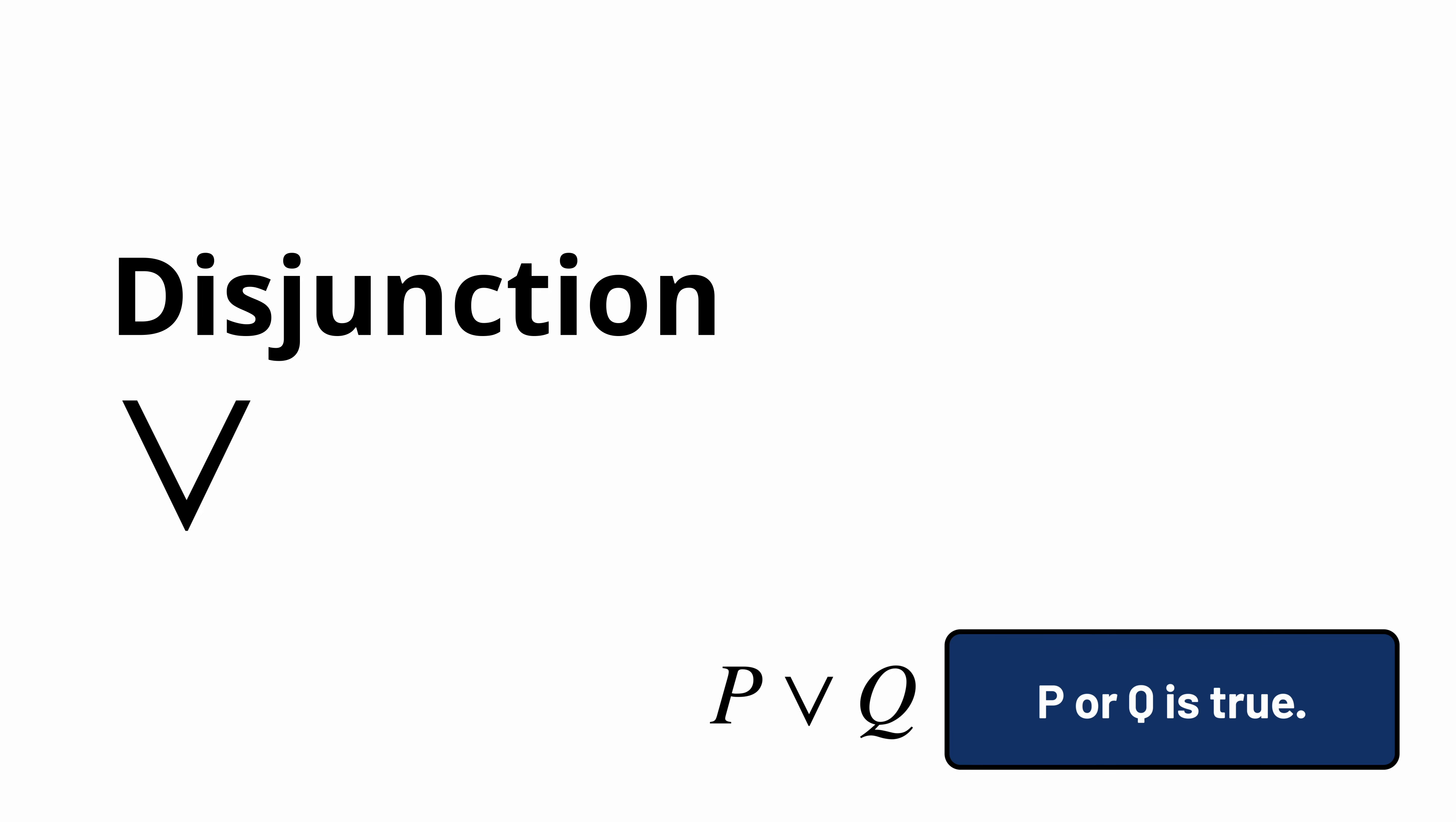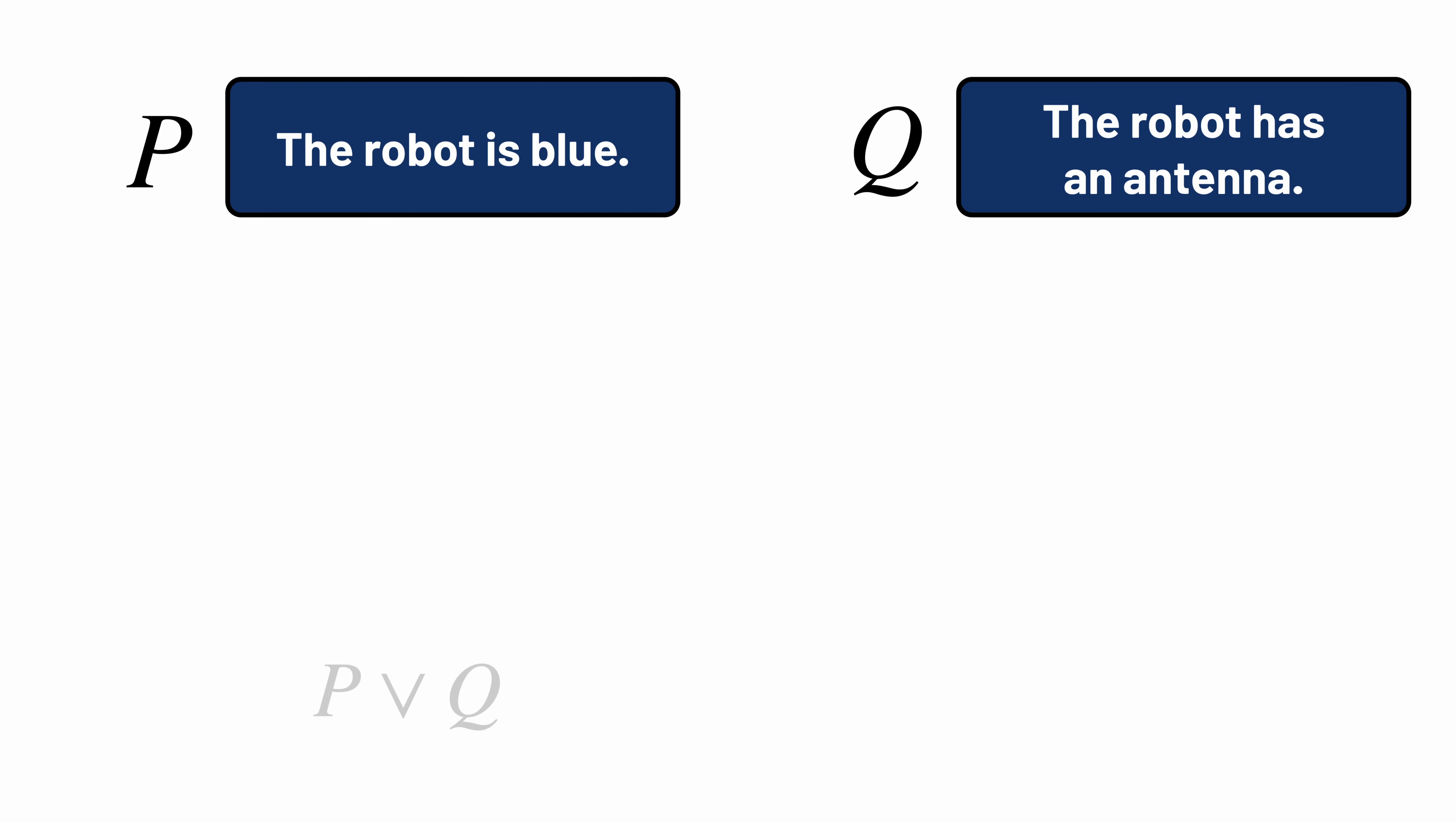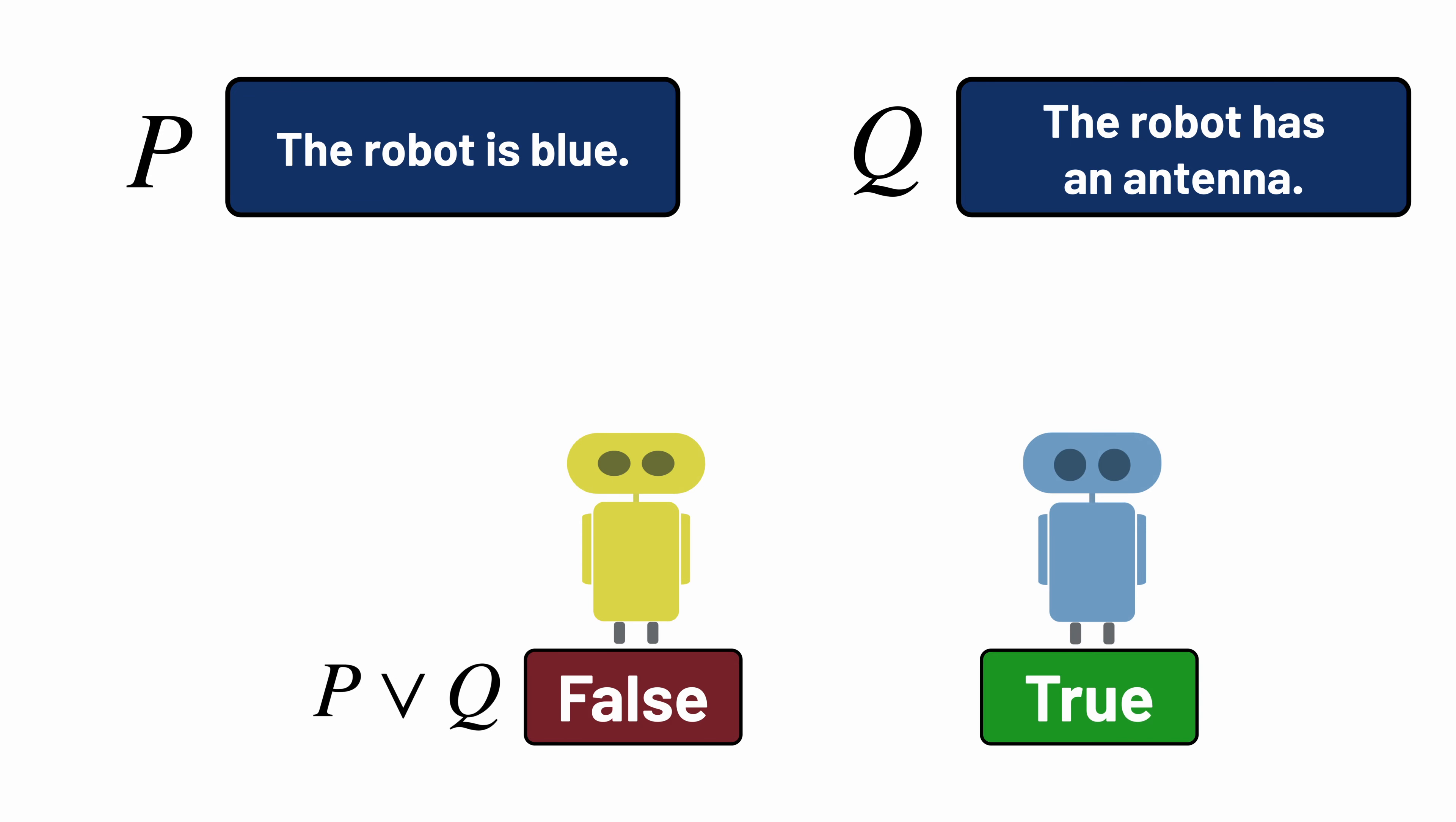Meanwhile, this symbol, called disjunction, or OR, takes two logical formulas and expresses the idea that at least one of them is true. In this case, the disjunction P OR Q is a formula that's true as long as the robot is blue, or has an antenna, or maybe both.